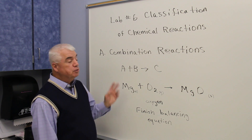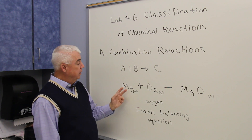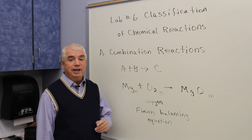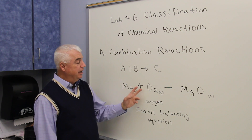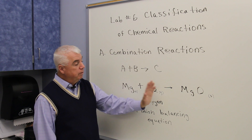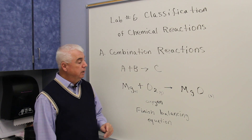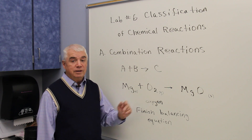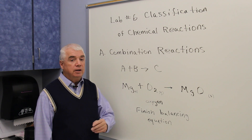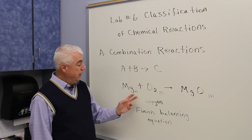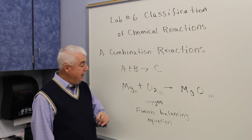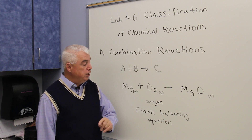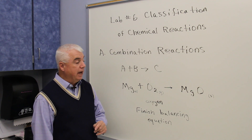In the first part of Part A, you'll take magnesium, which is a solid, and burn it. Anytime something burns, it combines with oxygen. When we write a chemical equation, we want to be as accurate as we can, so rather than just putting O down, we know that oxygen travels around as O₂. The small 's' in parentheses indicates that magnesium is a solid, and the small 'g' in parentheses indicates that oxygen is a gas.